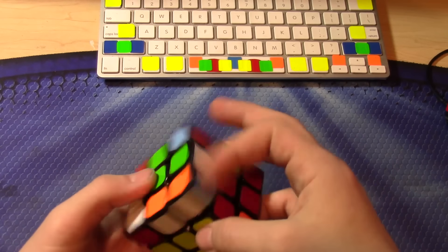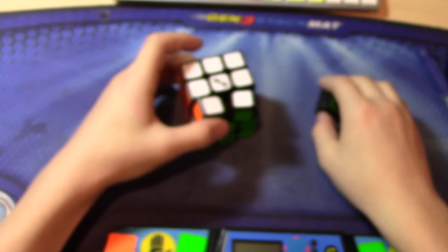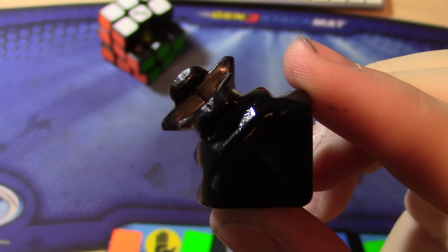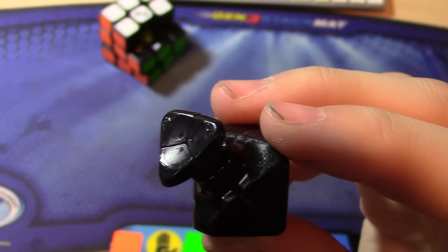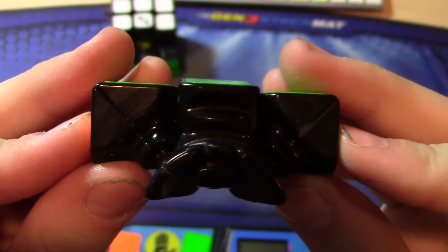The cube itself has a very buttery and smooth feel once you lube it and break it in, which I prefer over something like the feel of the Gans 356. And the pieces resemble that of a Hualang, except there are some slight curves that are missing in the Hualang corners.